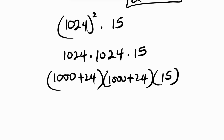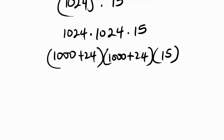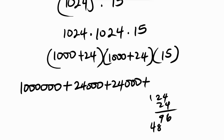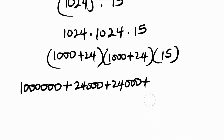So we have (1000 plus 24) times (1000 plus 24), then times 15. If you're enjoying this step-by-step breakdown, subscribe to this channel — we drop videos like this daily. Now multiplying out: 1000 times 1000 is 1,000,000; 1000 times 24 gives 24,000; another 24,000; and 24 times 24 gives 576.